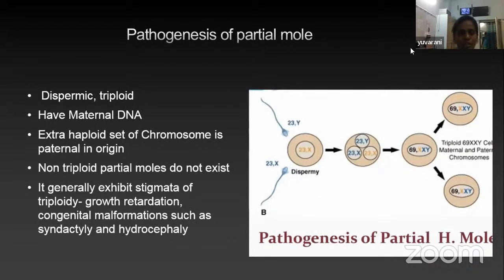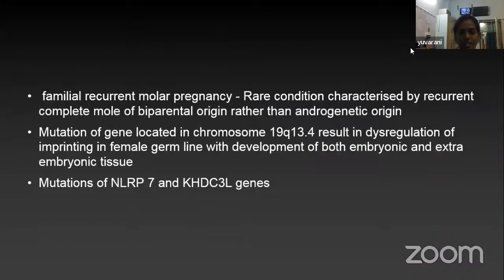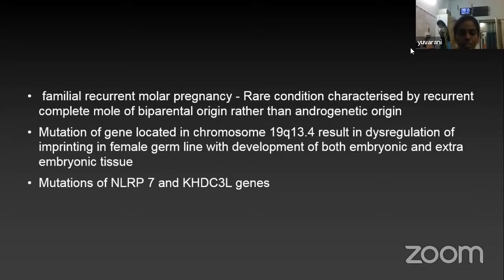Next is the pathogenesis of partial mole. They are dispermic and triploid and have maternal DNA. The extra set of haploid chromosomes is paternal in origin; hence non-triploid partial moles do not exist. They generally exhibit stigmata of triploidy such as growth retardation and congenital malformations like syndactyly and hydrocephaly. The karyotype will be 69XXY. There is a rare condition called familial recurrent molar pregnancy characterized by complete mole of biparental origin, due to mutation of a gene located at chromosome 19q13.4, resulting in dysregulation of imprinting in the female germline. This is also seen as a result of mutation of NLRP7 and KHDC3L genes.